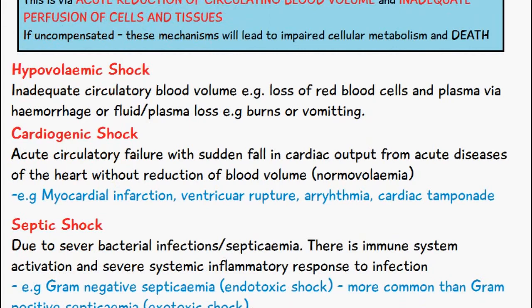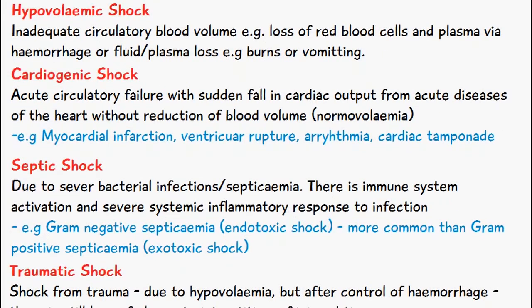We can classify shock into several types. First, hypovolemic shock, where we have inadequate circulatory blood volume. This can be due to loss of red blood cells and plasma via some form of hemorrhage, or fluid and plasma loss, which can happen through burns or vomiting.